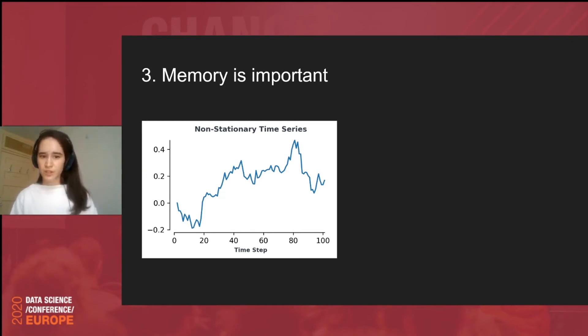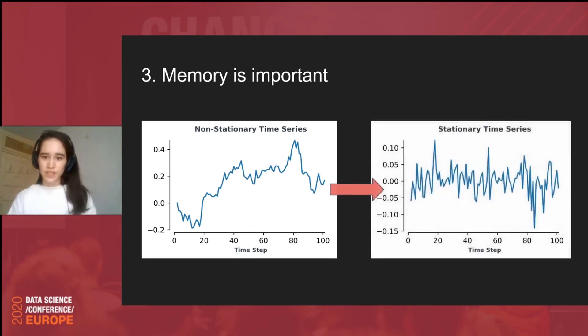So, time series models such as ARIMA, so auto-regressive integrated moving average, they assume that the data you're working with will be stationary. So, you need to make it stationary. And, again, to reiterate, stationary means that the distribution of a time series does not change over time, so its mean and variance don't change. So, taking a look at the time series on the left of the slide, it's non-stationary so that the mean from time step 0 to 20 is about negative 0.1 and the mean from time step 40 to 60 is about 0.2.